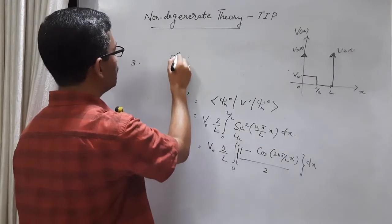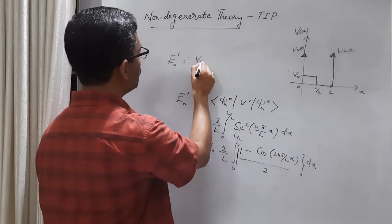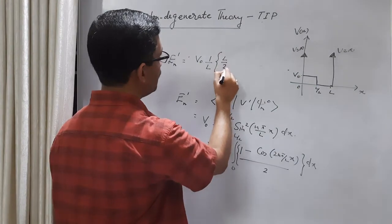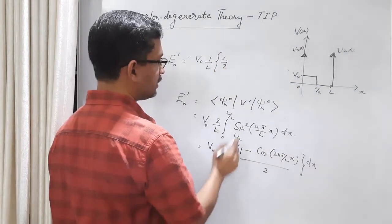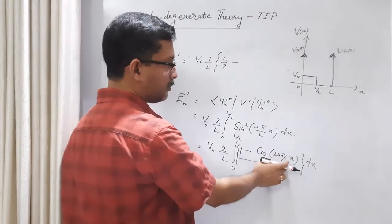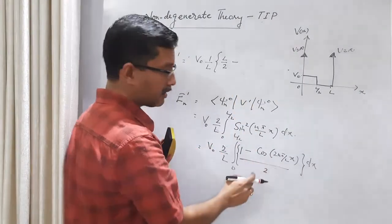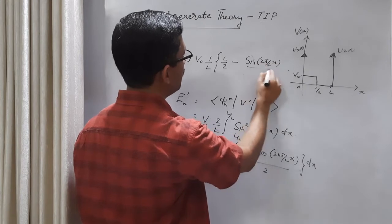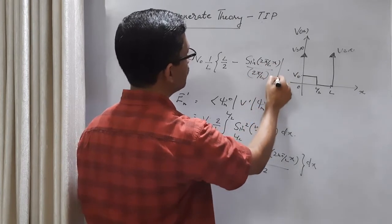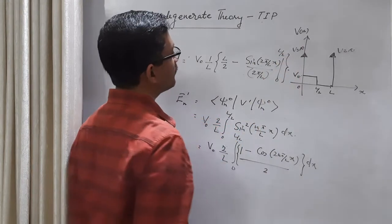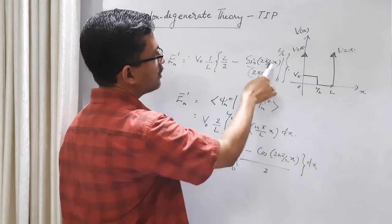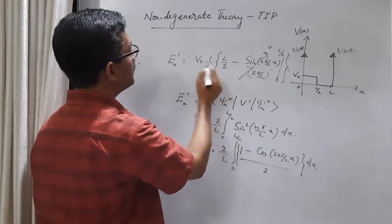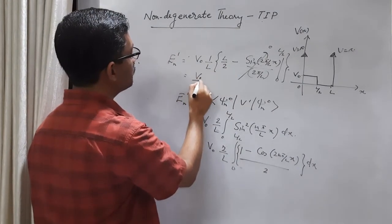So En1 is equal to V'0 times 1 by L, integral of 1 dx minus cos(2n pi by L times x) dx, integrated from 0 to L/2. Then sin(2n pi by L into x) divided by 2n pi by L, integrating from 0 to L/2. At the upper limit L/2, sin(2n pi) is 0. At the lower limit 0, sin(0) is also 0. So there is an L/2 here, and L cancels.